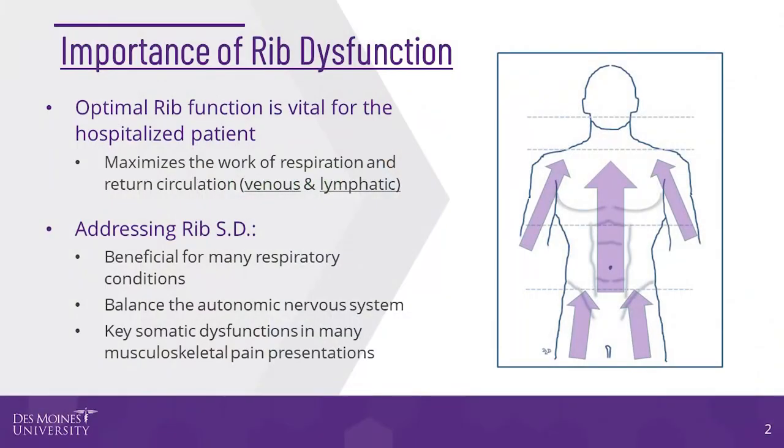In the hospitalized patient, treatment of rib somatic dysfunction is important to optimize respiratory and circulatory function and prevent hospital-acquired comorbidities. In the ambulatory setting, treatment of rib somatic dysfunction addresses a multitude of common pain presentations, including interscapular and mid to upper back pain, as well as head, neck, and upper and lower limb complaints.